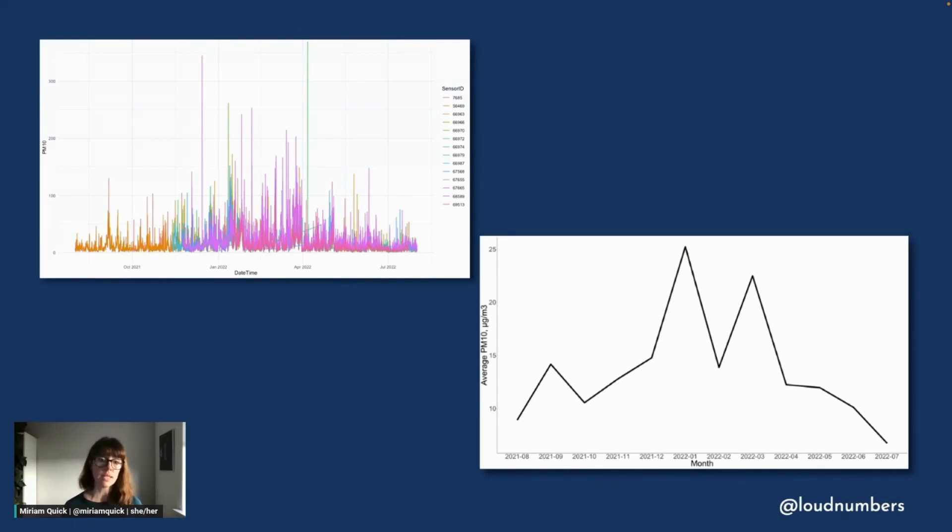You can see it's pretty noisy. There's a lot of these very short-term peaks and not all the sensors are switched on at the same time. So to sonify this data, I decided to strip out some of the noise, to radically simplify it. And in the end, I reduced it to just 12 numbers. And these are the monthly average PM10 readings aggregated across all the sensors. And this you can see plotted in the chart on the right.